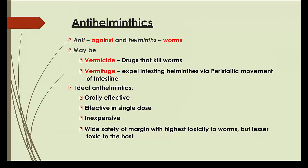Ideal anti-helminthics should have these properties: they should be orally active and effective in a single dose — very important, because only then can we use them for mass programs. They must be inexpensive, which is very important especially for developing countries. And they should have a wide safety margin — high toxicity for worms but low toxicity to the host.